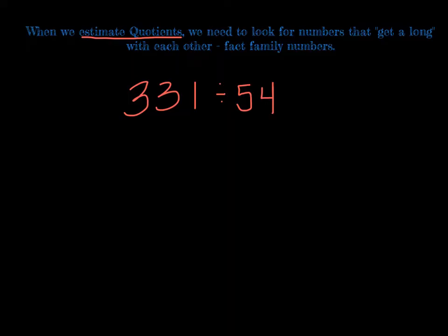What we're going to do, just like when we work with one-digit divisors, we're gonna look at first our 5 and our 33. We're gonna look at fact family numbers for that. I want you to ignore the 4 in the 54, and I want you to ignore the 1 in the 331. What fact family numbers get along here? We know that 33 cannot easily be divided by 5. They don't get along. So let's do some work on the side over here.